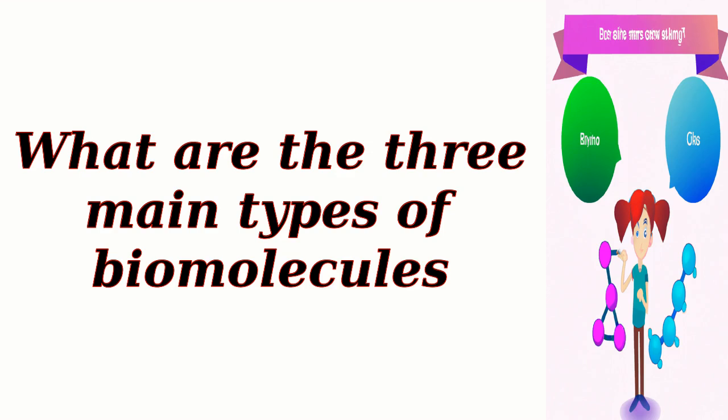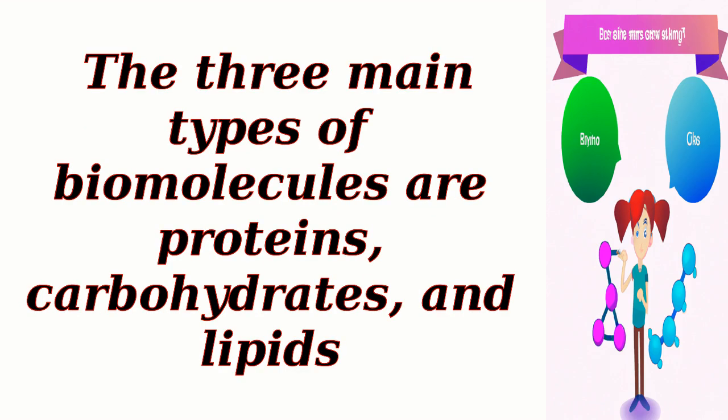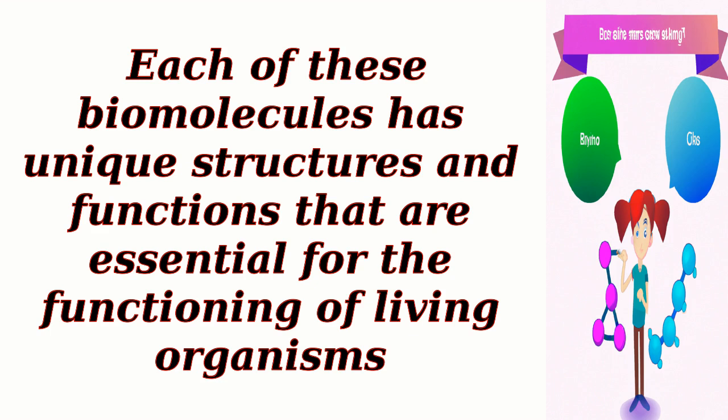What are the three main types of biomolecules? The three main types of biomolecules are proteins, carbohydrates, and lipids. Each of these biomolecules has unique structures and functions that are essential for the functioning of living organisms.